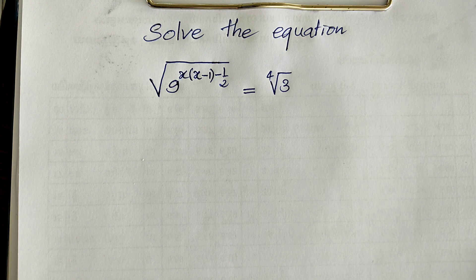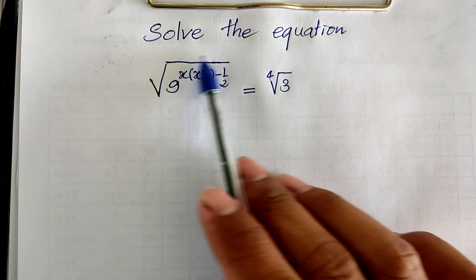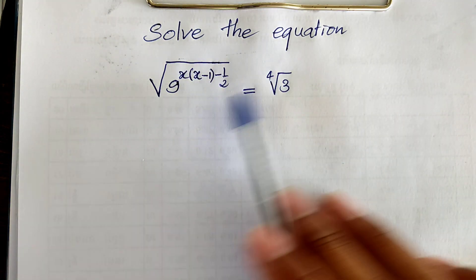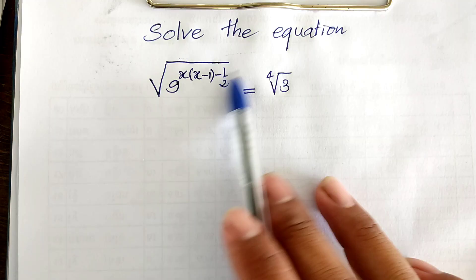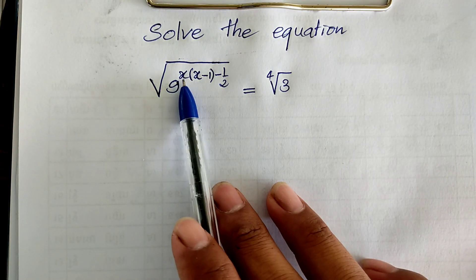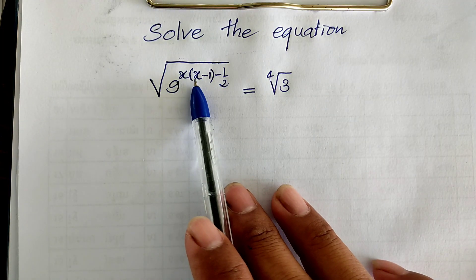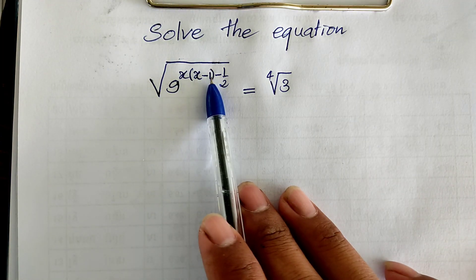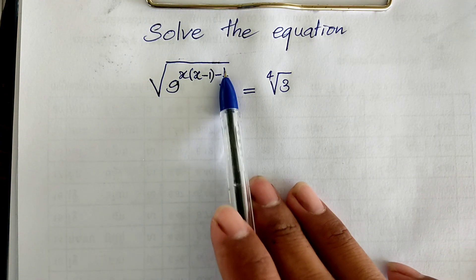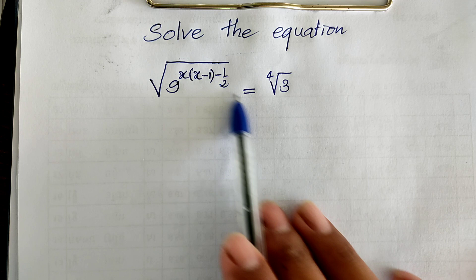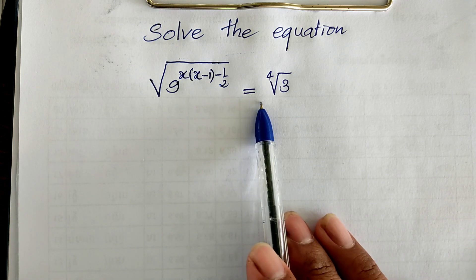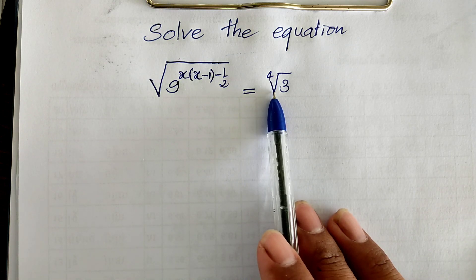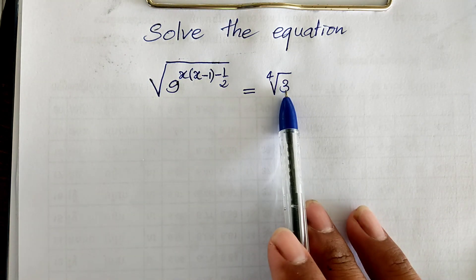Today I have one exercise like on paper: solve the equation — square root of 9 to the power h(h minus 1) minus 1 divided by 2, equal to the 4th root of 3.